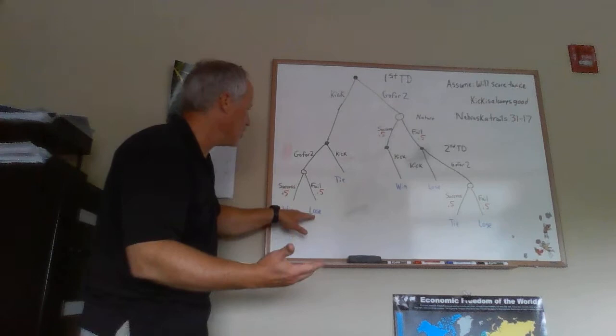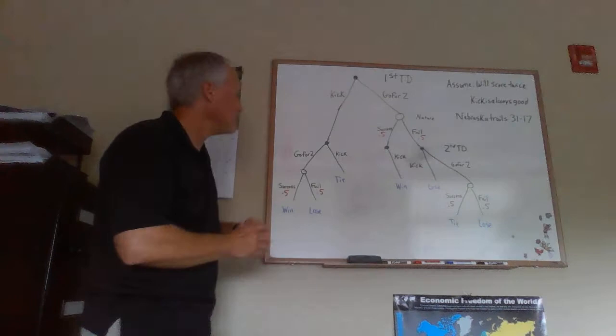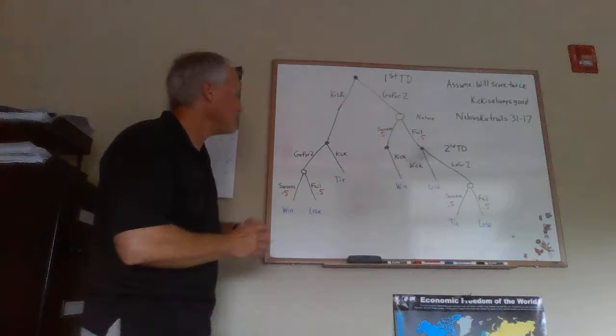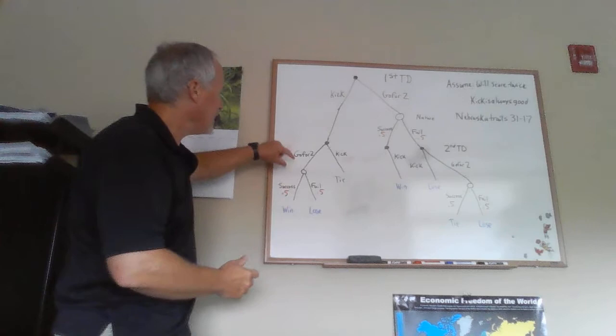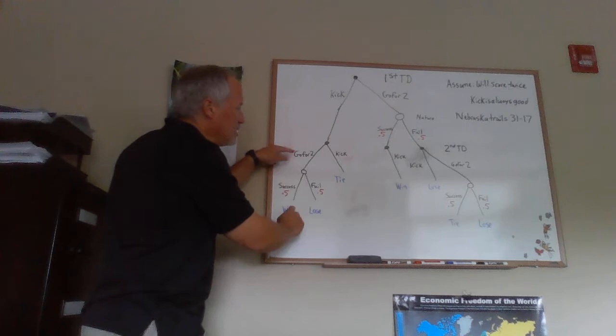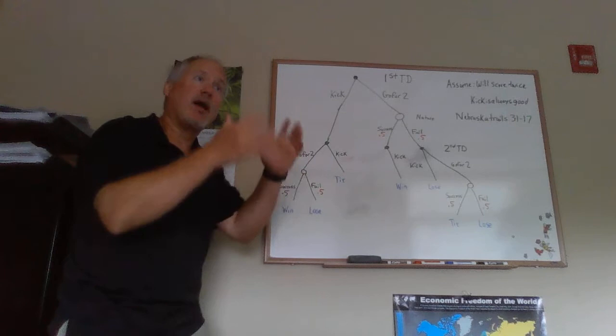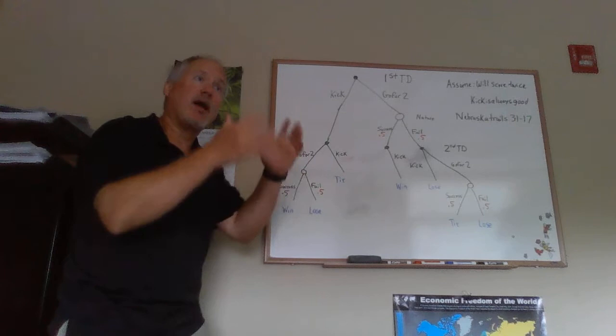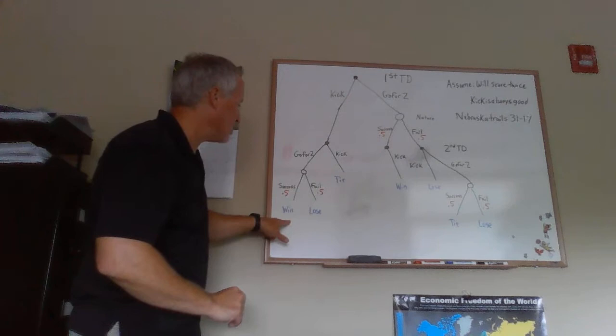If they kick the extra point, we assume they make it for sure and tie the game. What we can say is that Coach Osborne showed he preferred this coin flip between winning or losing to tying the game. It's not clear-cut — different people could look at this differently. But Coach Osborne chose to go for two, revealing that a lottery with a 0.5 probability of winning and 0.5 probability of losing was in his mind preferred to settling for the tie.